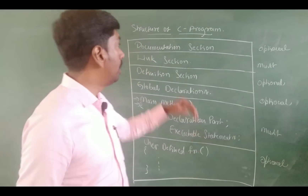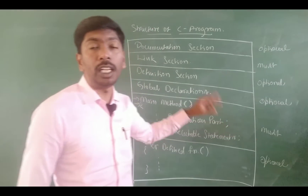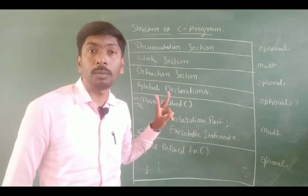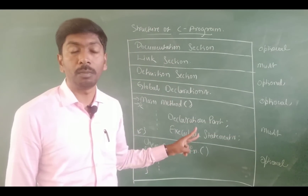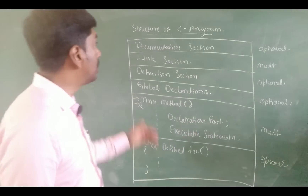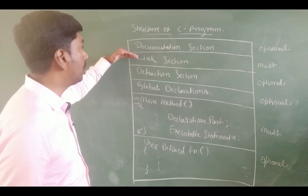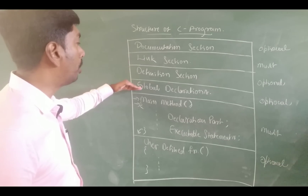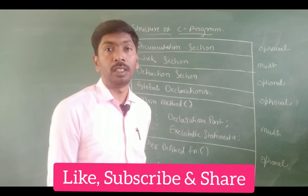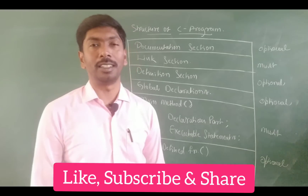But the link section and main function are mandatory. This is the simple structure of the C program: documentation section, link section, definition section, global declaration, main method, and user defined function. This is the simple structure.